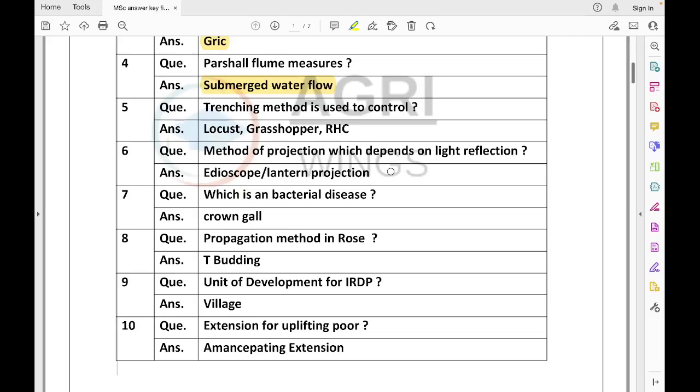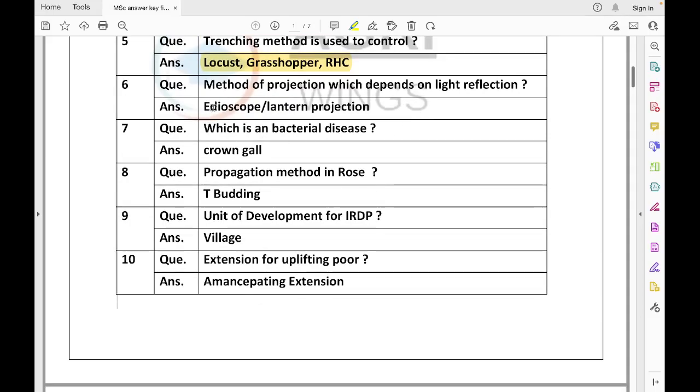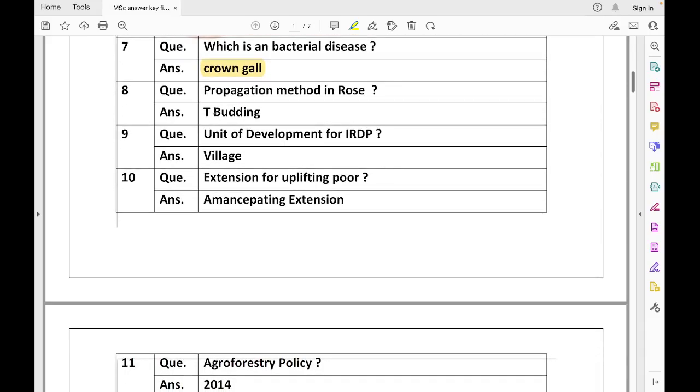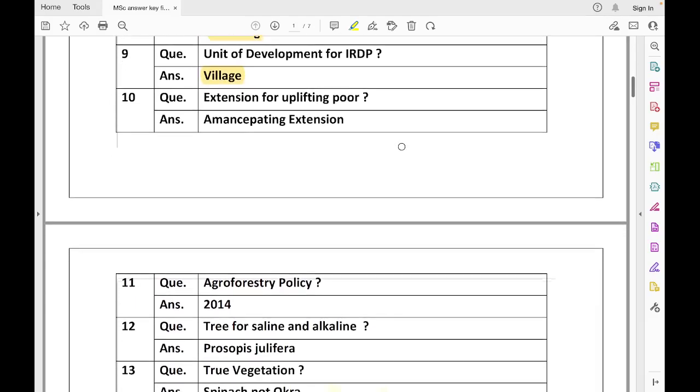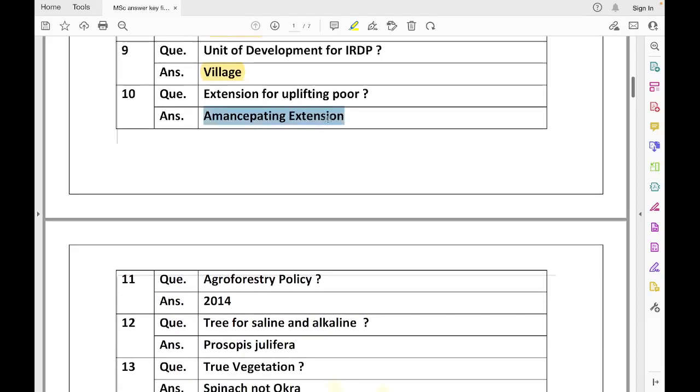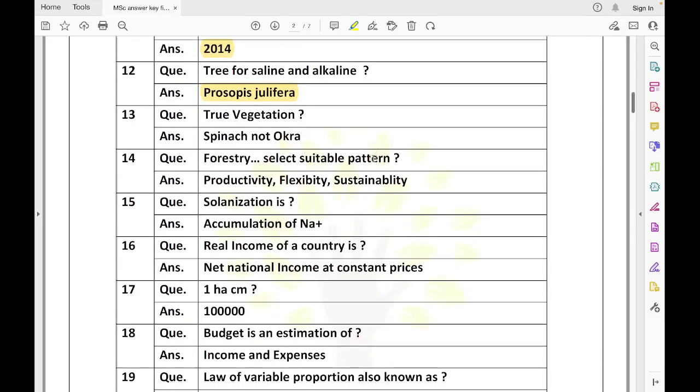Parshall flume measures what? Among the options were flowing water, free flowing water, submerged water flow, both A and B or none. The answer is submerged water flow. Next, the trenching method is used to control locust, grasshopper, and red hairy caterpillar. Method of projection which depends on light reflection - this is an extension question where idioscope or lantern projection both could be correct.